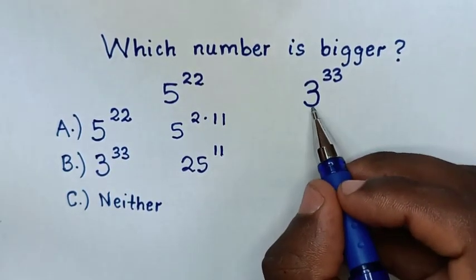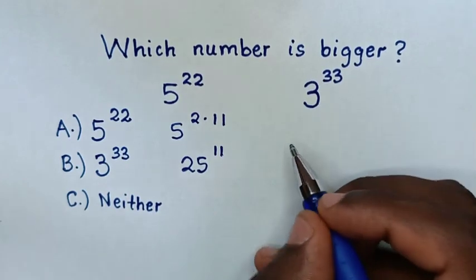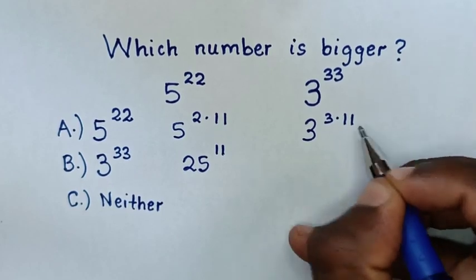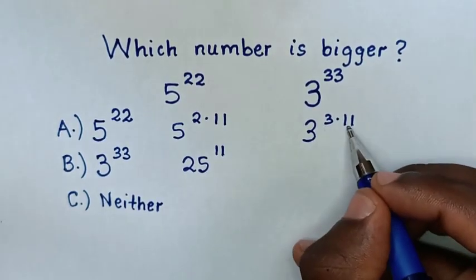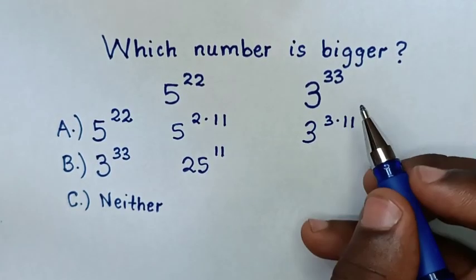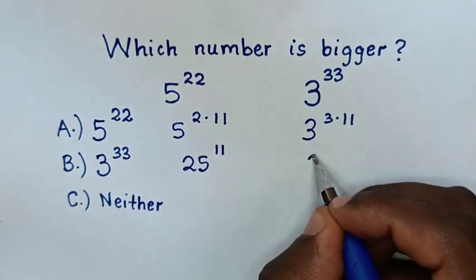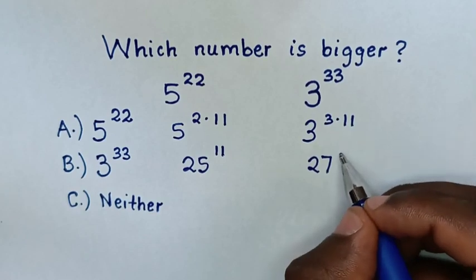Then, from here, 3 to the power of 33 we can write as 3 to the power of 3 times 11. Because 3 times 11 is 33, we can write 3 to the power of 3 as a base of 27 to the power of 11.